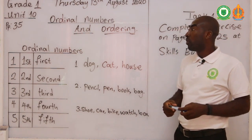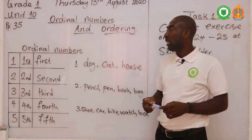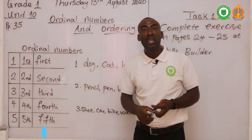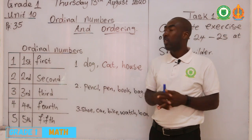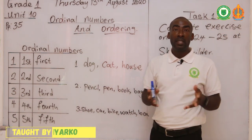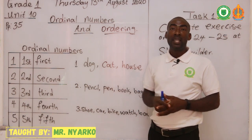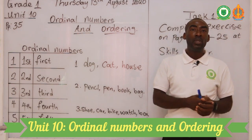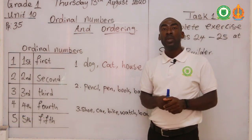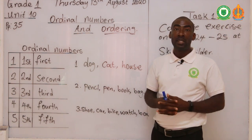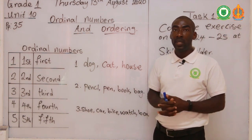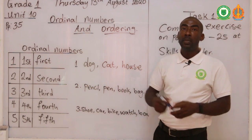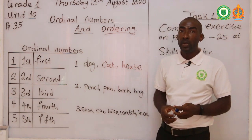Today we will look at what ordinal numbers are. When we say ordinal numbers, it means we are talking about numbers that show the position of a particular thing. Let's use your exams as an example. In your exams somebody was first and someone was also second, third, up to the last person. Assuming you were 25 in your class, the last person who had the least mark becomes the last person. So ordinal numbers help us to understand the position — who is first, who is second, and who is third.